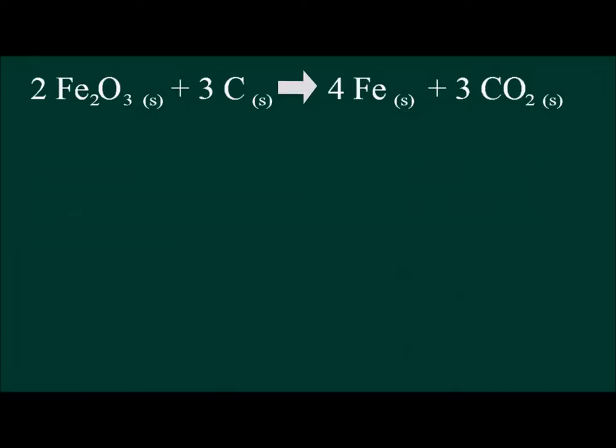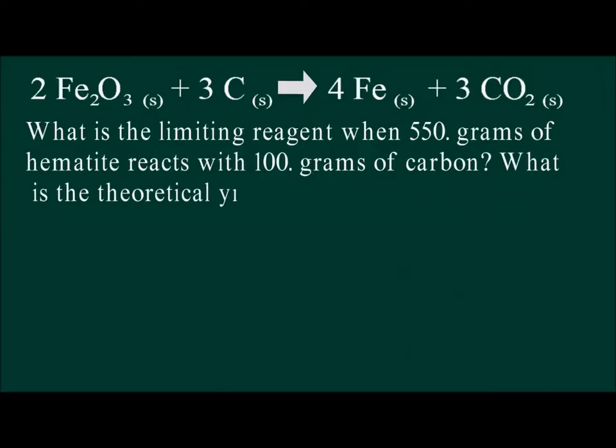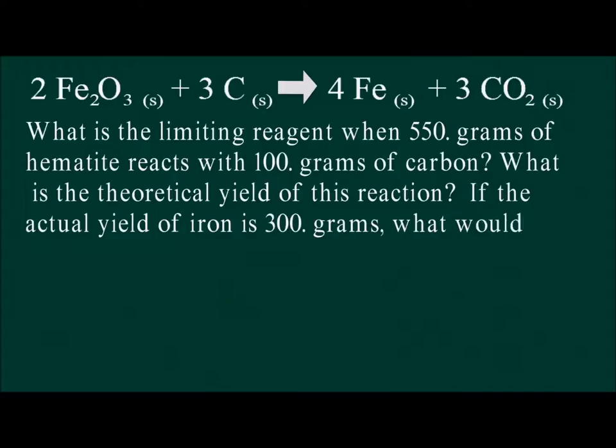The problem we are asked to solve is: What is the limiting reagent when 550 grams of hematite react with 100 grams of carbon? What is the maximum amount of iron that could be produced from this reaction? And what is the percent yield if the actual mass of iron produced is 300 grams?